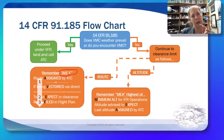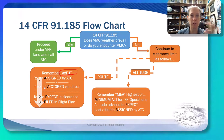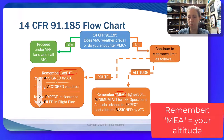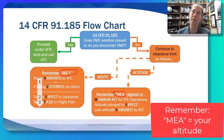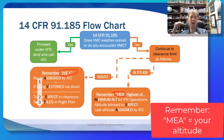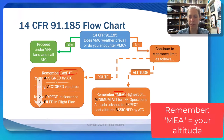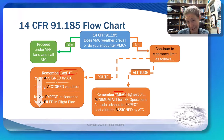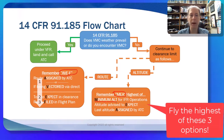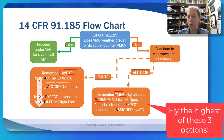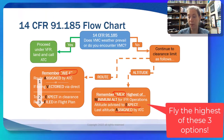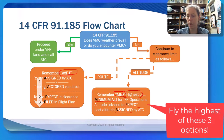Next, look at what altitude to fly. We use another acronym — MEA — but here for a different meaning, to help remember altitude with lost communications. You fly the highest of these three things: the minimum altitude for IFR operations, whatever ATC told you to expect, or whatever was assigned by ATC. It's not a priority order — you pick the highest of those three altitudes, because that's the safest thing to do.